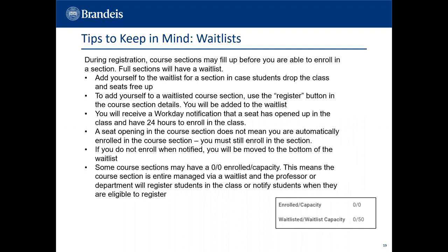Tips to keep in mind about waitlists: during registration, course sections may fill up before you are able to enroll. Full sections will have a waitlist — add yourself in case students drop the class and seats free up. To add yourself, use the register button in the course section details. You will receive a Workday notification when a seat opens and have 24 hours to enroll; a seat opening does not mean you are automatically enrolled — you must still enroll. If you do not enroll when notified, you will be moved to the bottom of the waitlist. Some sections may have 00 enrolled capacity, meaning they are entirely managed via waitlist and the professor or department will register or notify students when able.